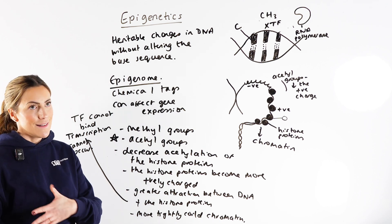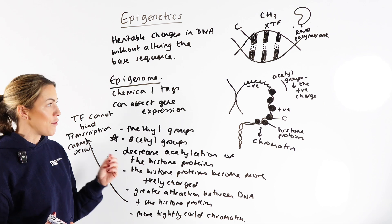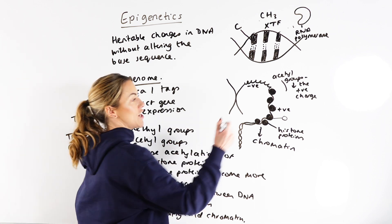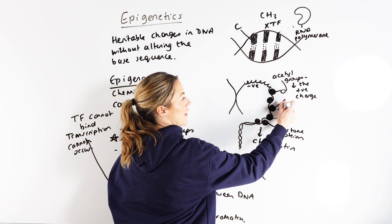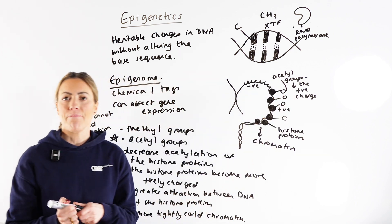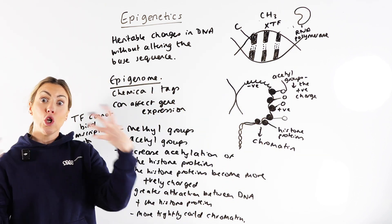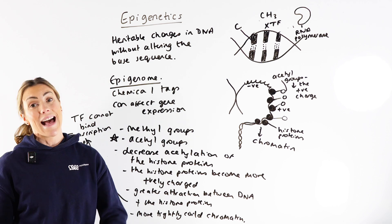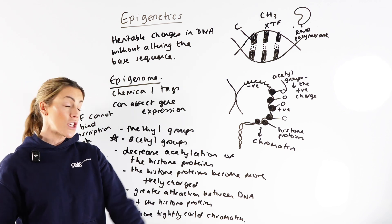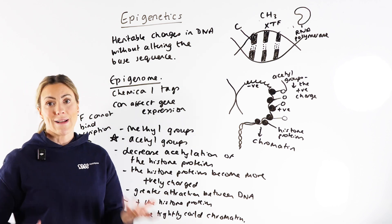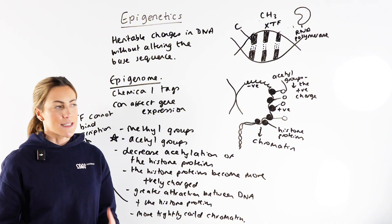The opposite is also true — if we increase acetylation, then the chromatin becomes more loosely coiled. We do initiate transcription and we can see more transcription and more gene expression.